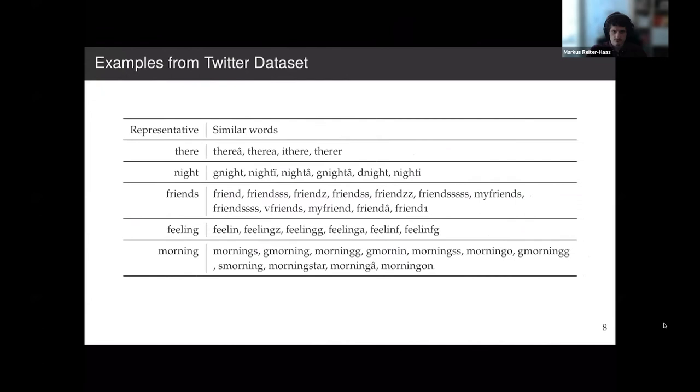Before we're looking at those numerical scores, I would like to give you a real sense of the output of the algorithm. Here's what we get from the Twitter dataset. The first column is the representative word that is picked by the algorithm. The second column is all the other similar words which are considered to be similar to the first column. And suppose we look at the first row there, and we find all the words similar - there with a hat, there with A, and I there, and there are - they are quite similar to the first representative word.